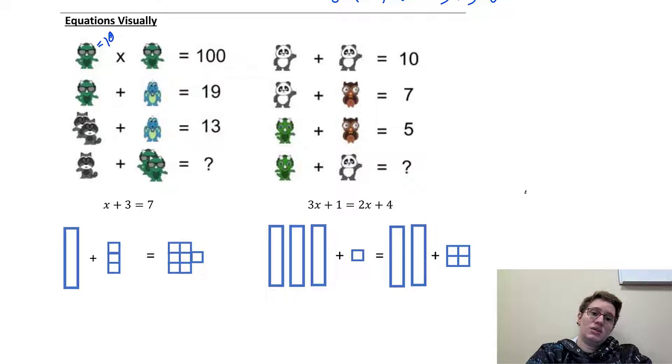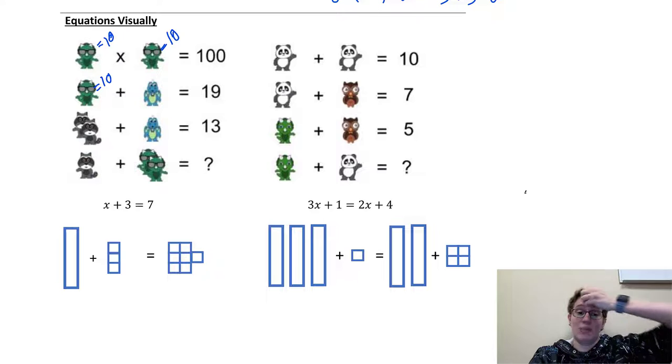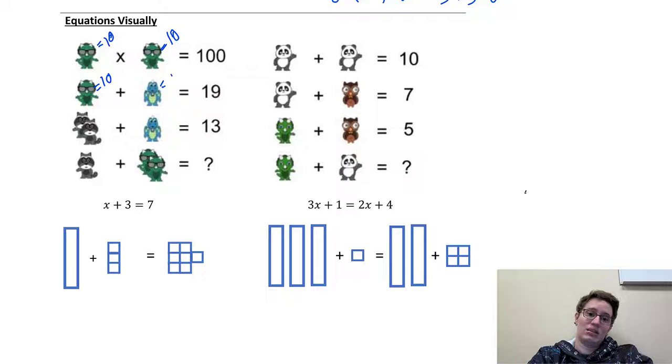And so then one of the things we can do here, and this is not what we're actually doing on the homework, I just think it's a fun visualization exercise. If those are 10, then it's also 10 here, because we didn't know what it was, but now we do. So, now everywhere that that happens, it's a 10. So, 10 plus dragon equals 19. So, what does that mean dragon is? Well, to get from 10 to 19, we need to add 9. So, the dragon is 9.